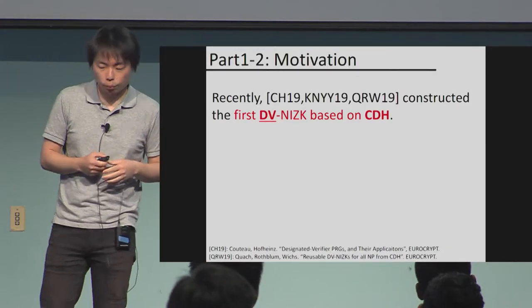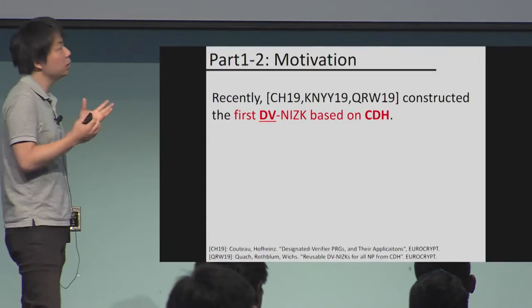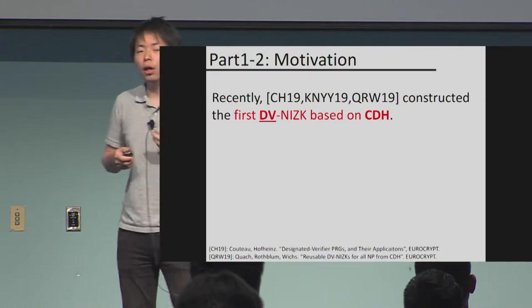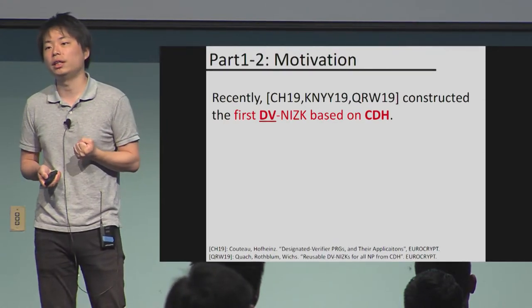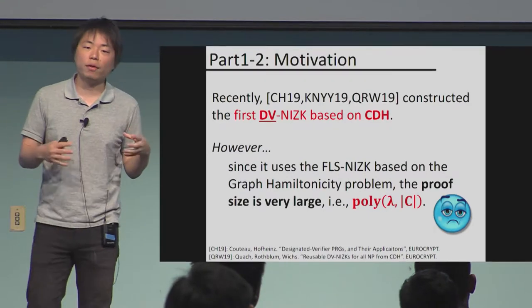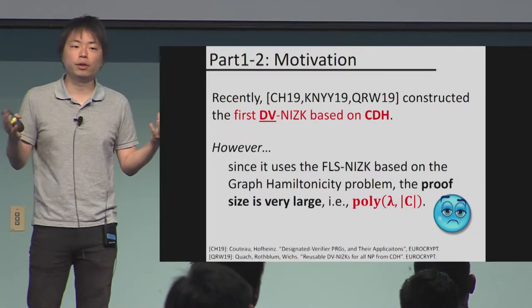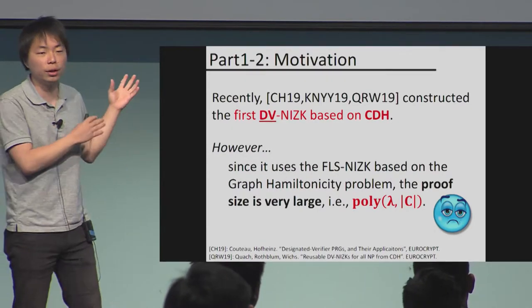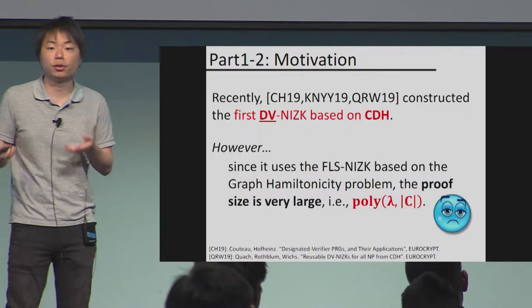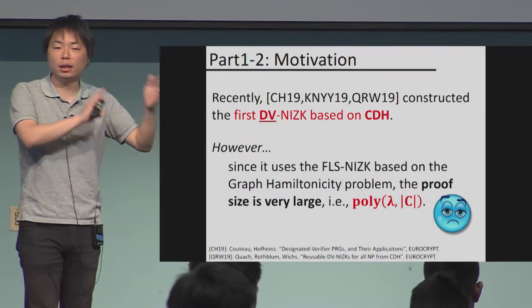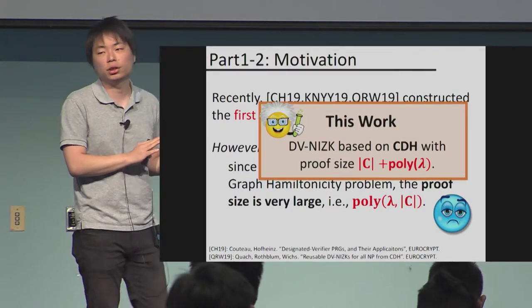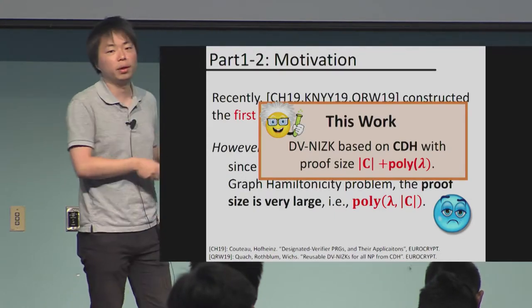Part two is about DV NIZKs, with a different motivation. Recently at EuroCrypt last year, Coretti, Huffines, us, and Quach, Rothblum, and Wichs all presented the first DV NIZK based on the CDH assumption. However, they relied on the FLS NIZK using the graph Hamiltonicity problem, so the proof size becomes very large when constructing a concrete NIZK — essentially polynomial in λ and the circuit size. The same question again: can we bring this down to |C| + poly(λ)? And we did — based on the same CDH assumption.